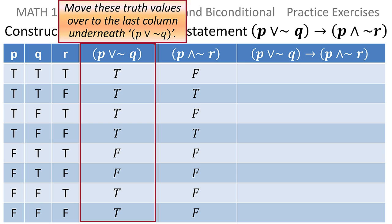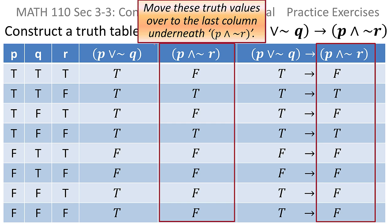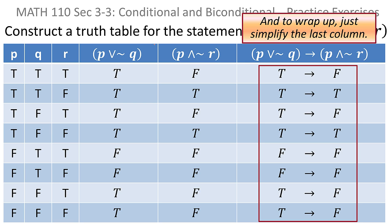Now I'm going to take the third, actually the fourth column, the column with the OR, and move it over to the last column underneath the OR statement. Then I'll do the same thing with the AND statement, moving it over to the last column underneath its counterpart. Once I do that, I see that I simply have an IMPLICATION to EVALUATE.